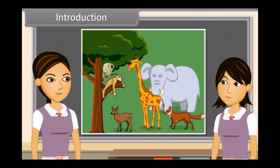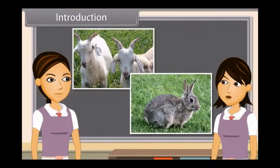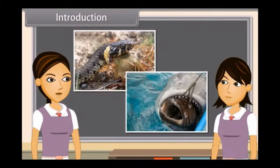There is a wide variety of animals on the basis of their type of food. Many animals eat only plants like grasses and leaves of plants, while some of them eat other animals. The big fish eat small fish, the birds eat worms and insects, snakes eat frogs, and some insects eat dead bodies of animals.